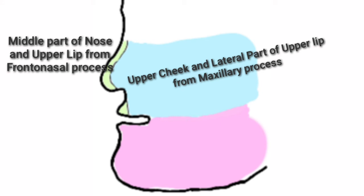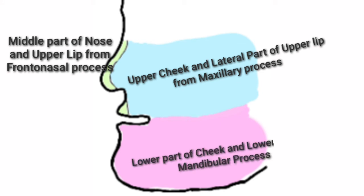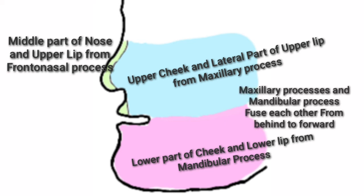See this diagram. The middle part of the nose and the middle part of the upper lip are formed from the frontonasal process. The upper cheek and lateral part of the upper lip are formed from the maxillary process. The lower part of the cheek and lower lip are formed from the mandibular process. The maxillary process and mandibular process fuse with each other from behind to forward.